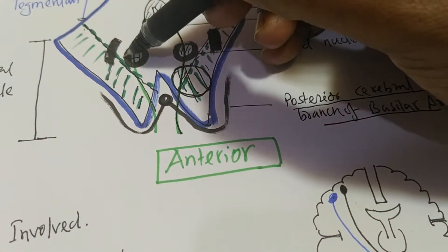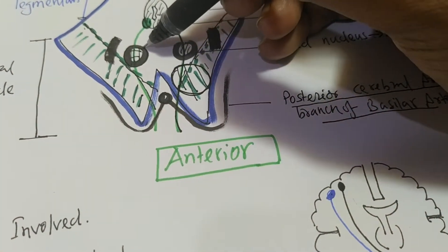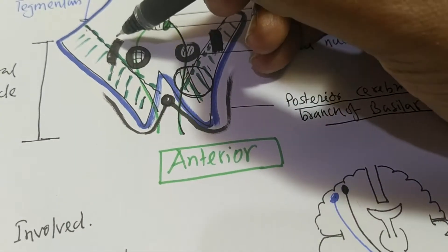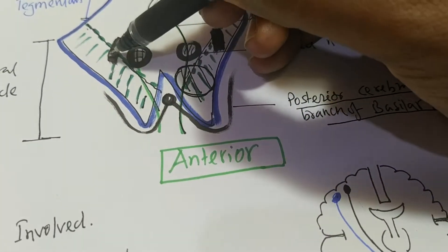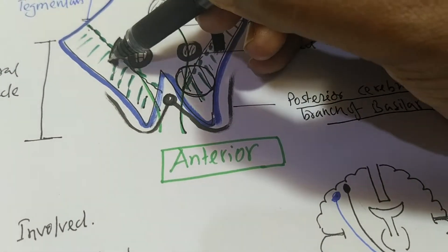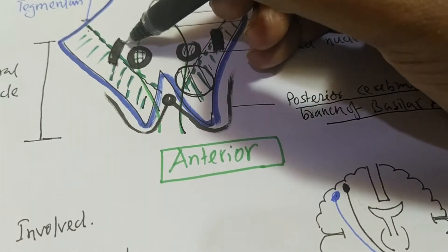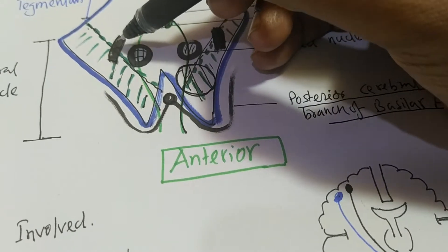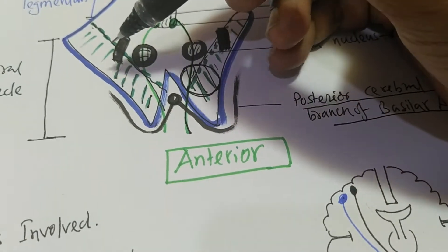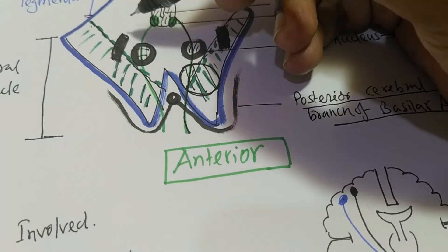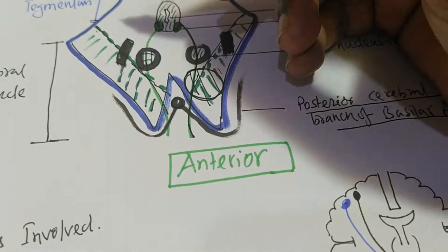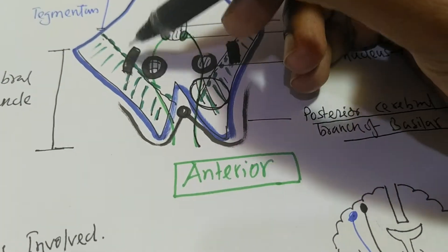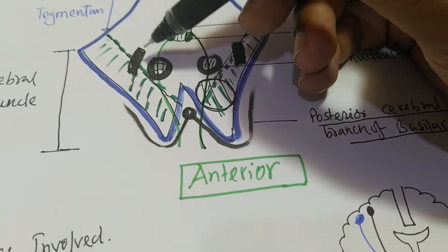The red nucleus is closely associated functionally with the black part called the substantia nigra, which is a part of the basal ganglia and is related to the synthesis of dopamine.